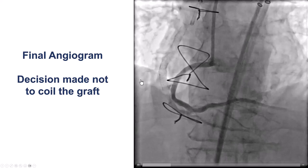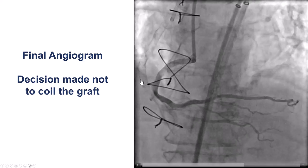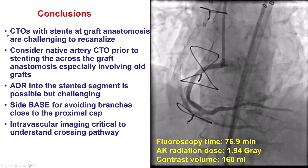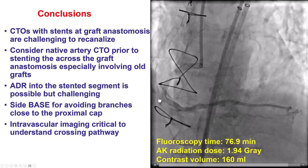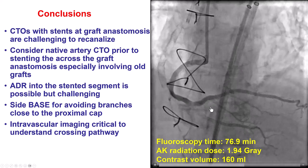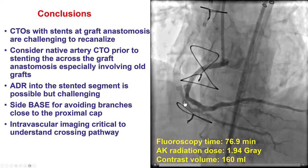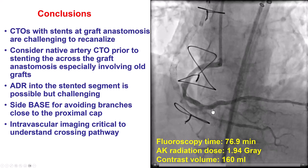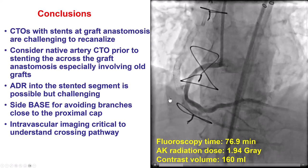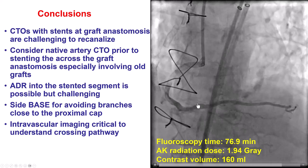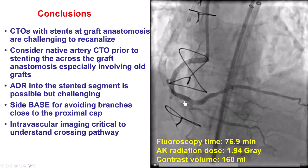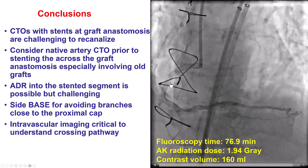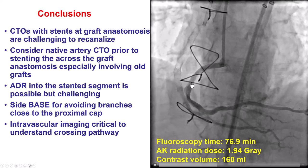We did not coil the graft as we had considered doing initially, and the patient had a good recovery. There are several lessons from this complex case. The first is that when there is a stent going from the saphenous vein graft into the native coronary artery across the distal anastomosis, that makes crossing antegradely of the native vessel very challenging. In this case we were fortunate to be able to puncture through the previous stent and advance the wire into the right posterior lateral. So before placing that stent, one may want to consider doing a PCI of the native coronary artery first, which would have made things much simpler.